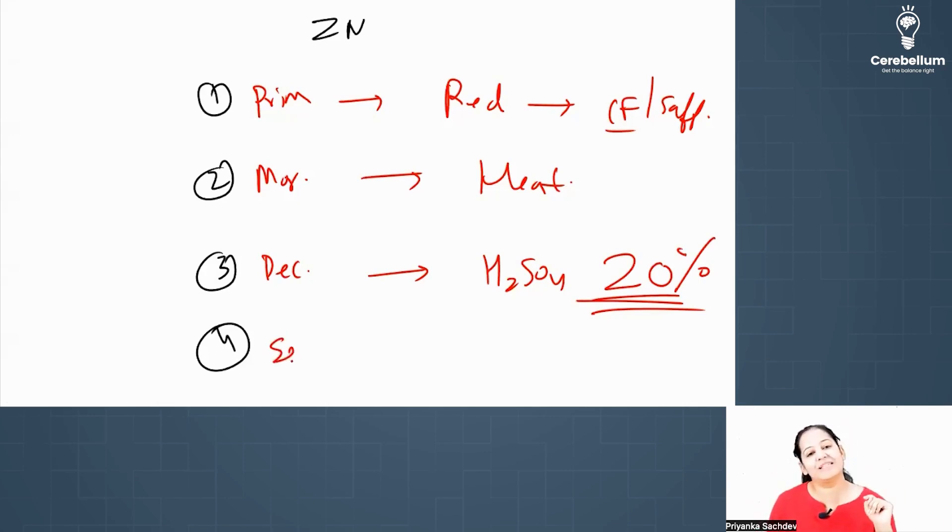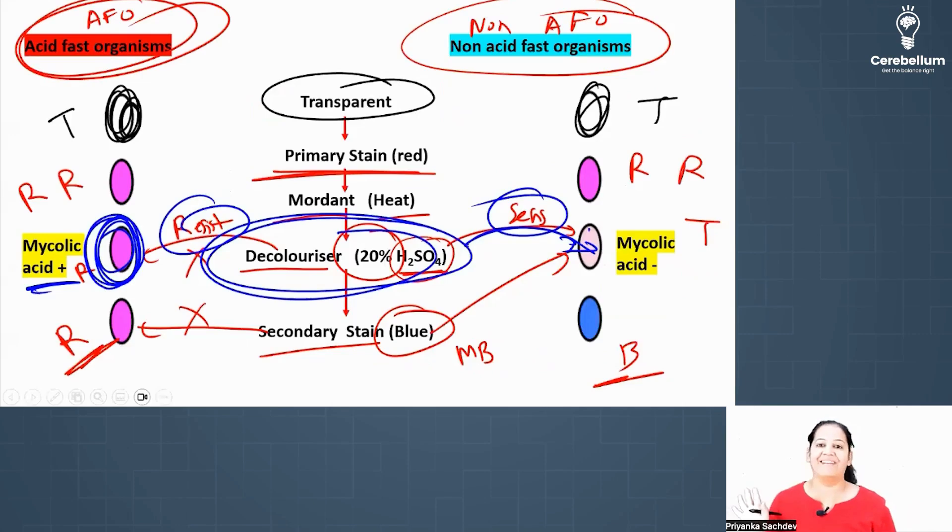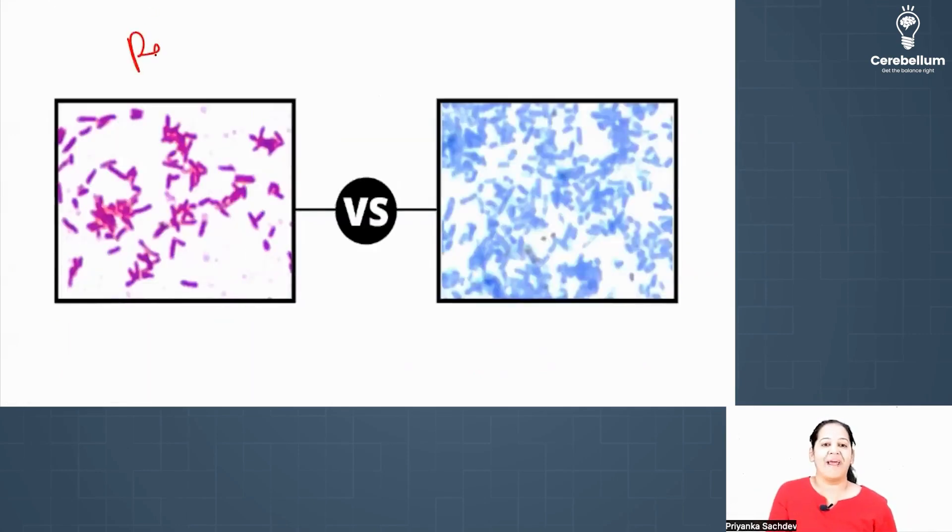And finally use the secondary stain. Any blue will work, any blue like methylene blue. So please learn the four steps very clearly, crystal clear. See the red, see the blue. These are AFO and these are non-AFO.